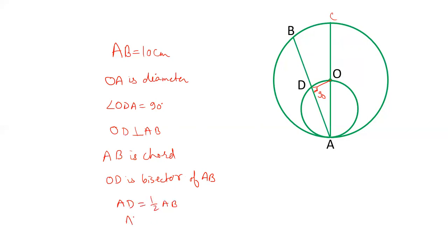AB is given as 10. Therefore, AD is 1 by 2 of 10, that is 5 centimeters. So, the length of AD is 5 centimeters.